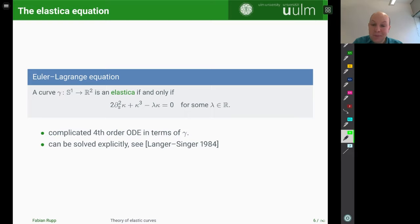So for some λ in R, if it's satisfied for some λ in R, I say that it's an Elastica. If I want a specified λ, I would say it's a λ Elastica. But anyway, this is a second order ordinary differential equation in terms of κ, which makes it then a fourth order ODE in terms of gamma, which will look rather difficult and very complicated.